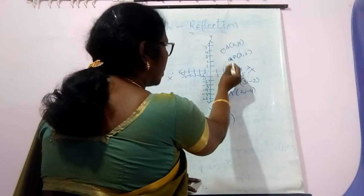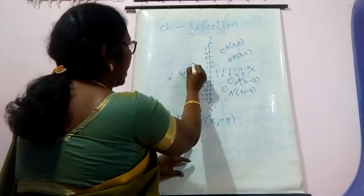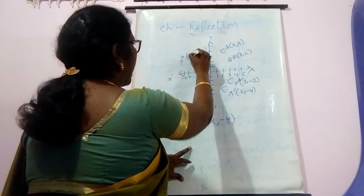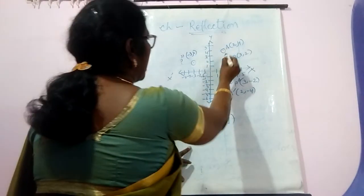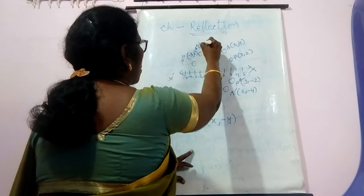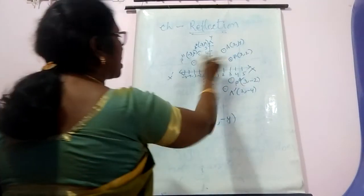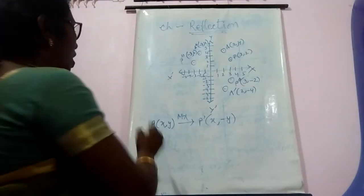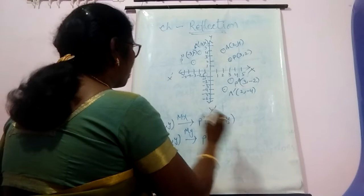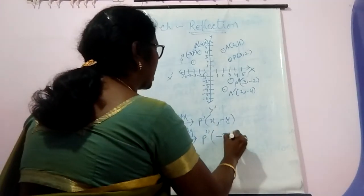Similarly, let us reflect point P(3, 2) through the y-axis. When it reflects through the y-axis, we get the image P''(-3, 2). When point A(2, 4) reflects through the y-axis, we get A''(-2, 4). We observe that the y-coordinate remains the same and the x-coordinate changes its sign. So when a point reflects through the y-axis, its y-coordinate remains the same and x-coordinate changes its sign.